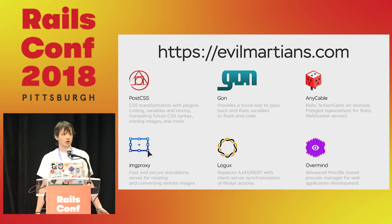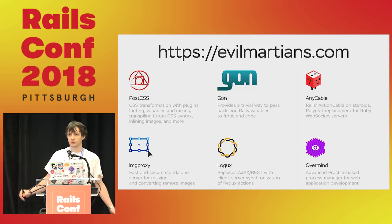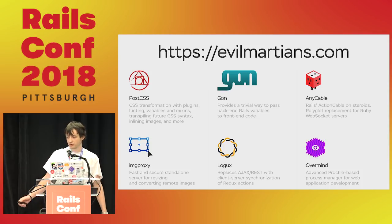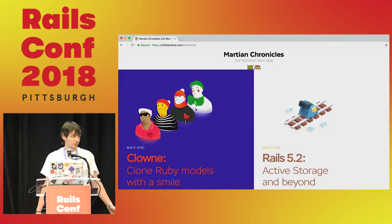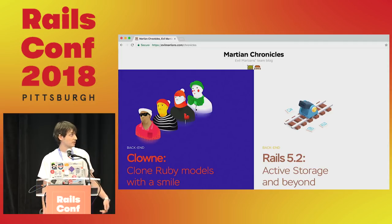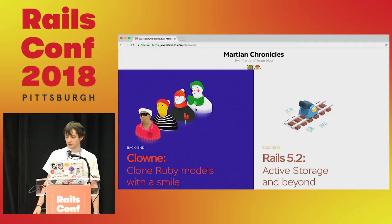I'm working for a company called Evil Martians. We're doing a lot of product development for large corporates, small startups, both sides of the ocean — any ocean, actually. And we're doing a lot of open source development. There are a few of our most popular tools for front-end and back-end development. Feel free to ask me about some of them. We're writing about everything in our blog with beautiful illustrations. The Rails 5.2 post was pretty popular.